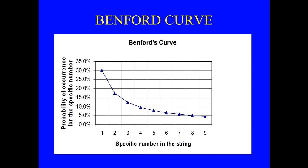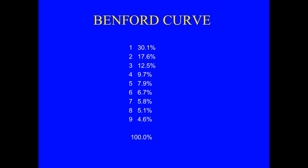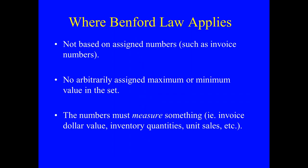The Benford curve is basically a curve with a negative slope. About 30% for the number one. Number two declines to about 17%. And then a little less than 5% for the number nine — actually 4.6%. Make sure that your data sets don't include assigned numbers. There can't be any arbitrary upper and lower limits — such as invoice numbers. The number has to actually represent the quantity or valuation of something real, like inventory, receivables, or payables.